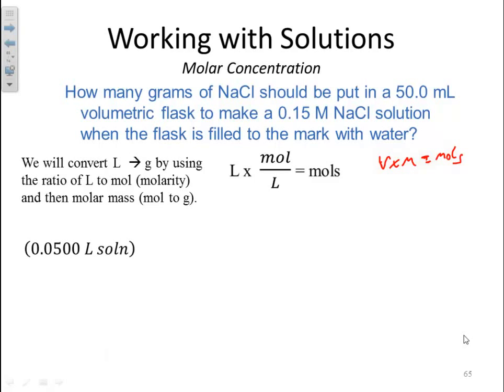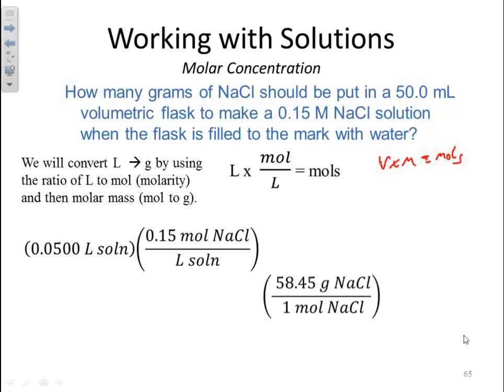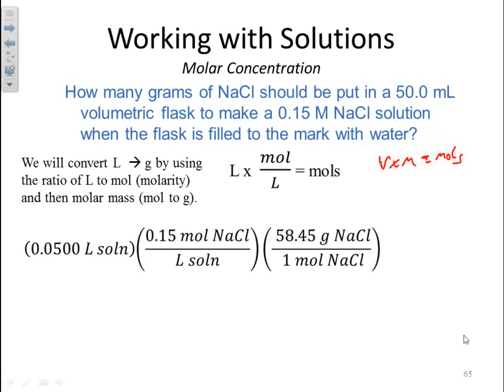So I'll start off with the volume, 50 milliliters, which I've changed to liters by moving the decimal place over by 3. 1,000 milliliters to 1 liter. I now multiply that by my molarity, so my liters of solution cancels, and that leaves me in moles of sodium chloride. Now, if I take the molar mass of sodium chloride, 58.45 grams for every one mole, cancel my units, I'm left with the term I'm looking for, which is the mass of sodium chloride, which gets me 0.44 grams of sodium chloride.